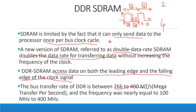So far we have seen SDRAM — which is synchronized and faster — and Rambus DRAM, which can be used with Intel and has 800 MT/s data transfer. DDR SDRAM is a newer version of SDRAM.